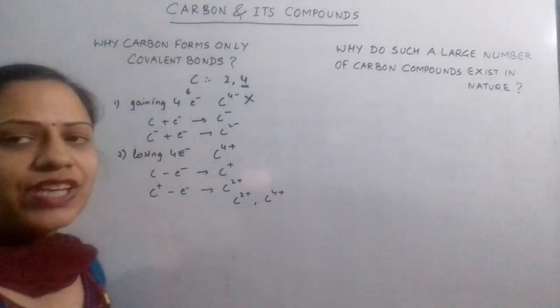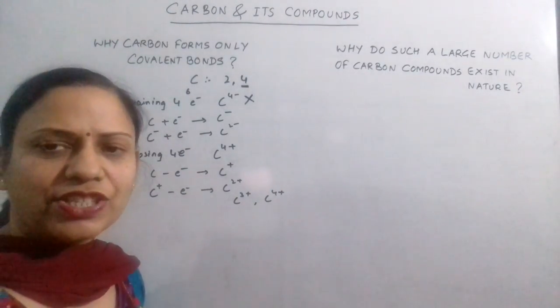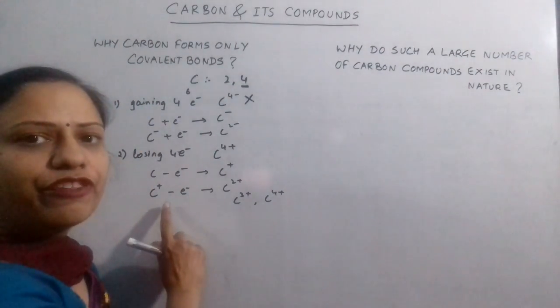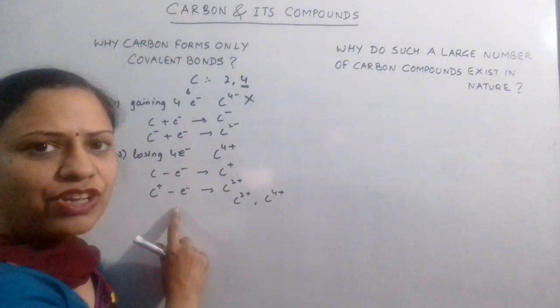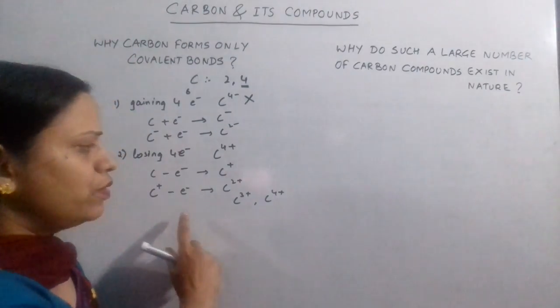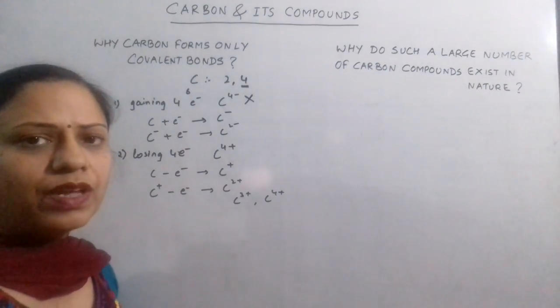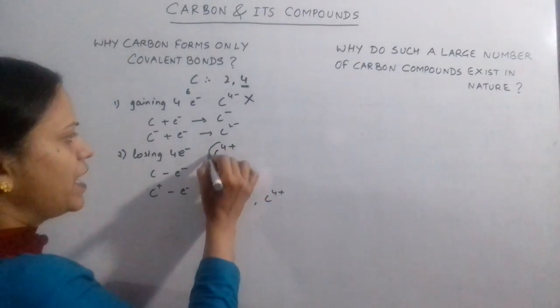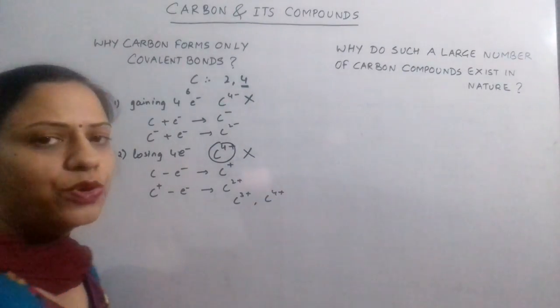Again, like charges repel and unlike charges attract each other. In this case we are trying to remove a negative charge from a positive charge while the two have a tendency of attraction. For removing an electron from a positively charged ion, a large amount of energy is required which makes C4 positive highly unstable. So this possibility is also ruled out.